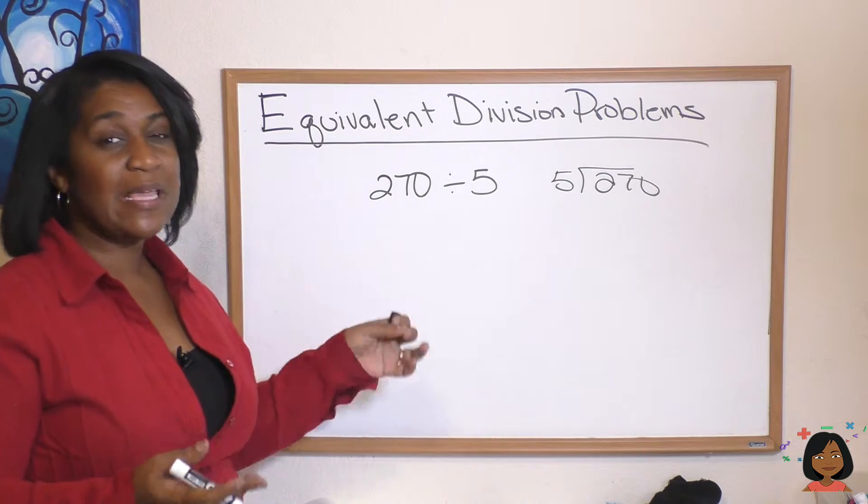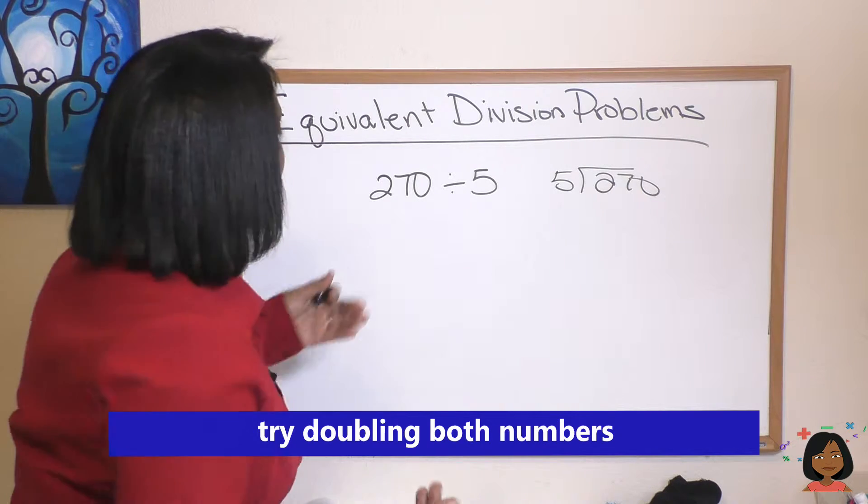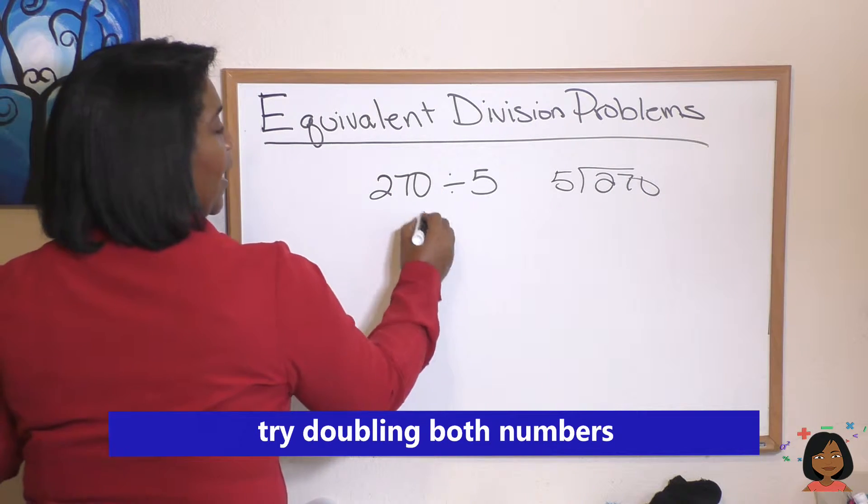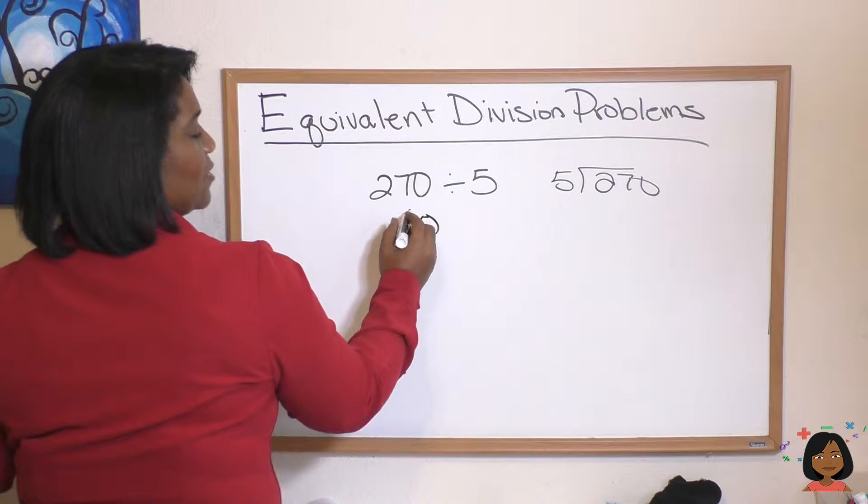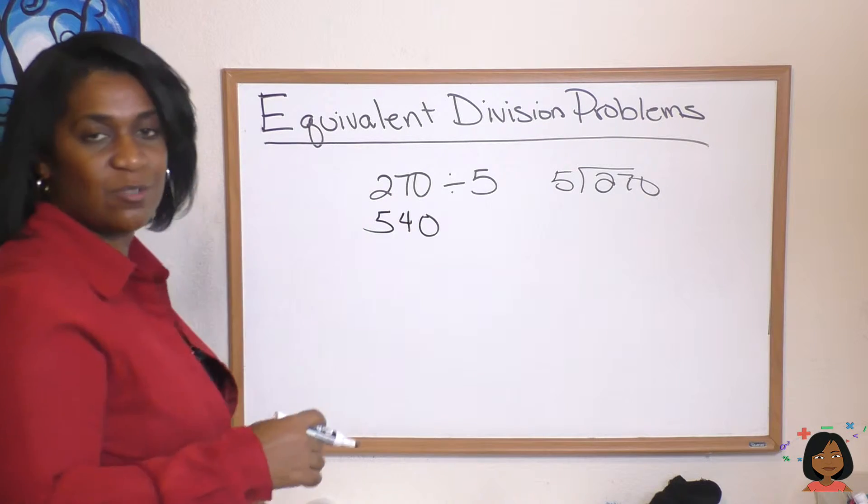What if I made it easy on myself? What if I doubled both of the numbers? Watch: if I double 270, I get 540. If I double 5, I get 10.